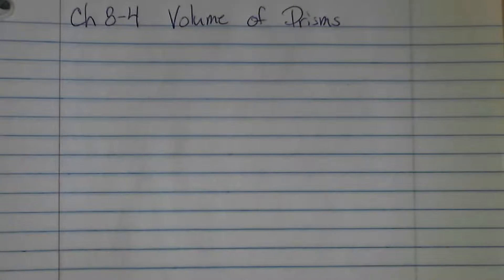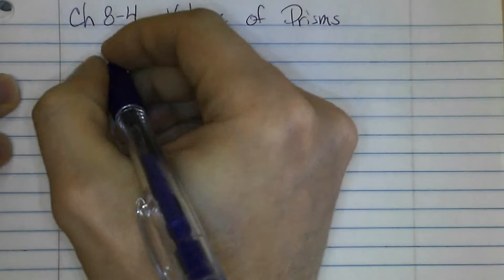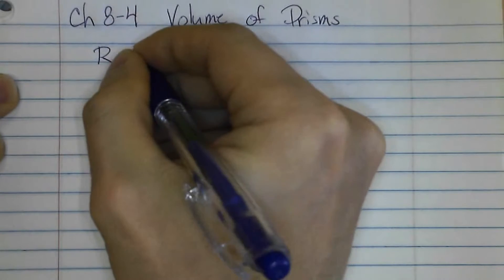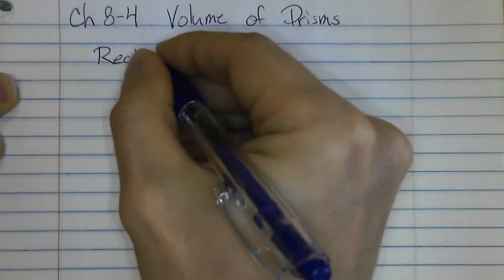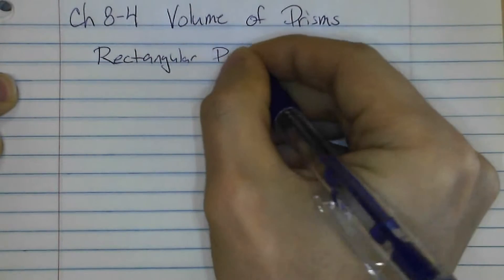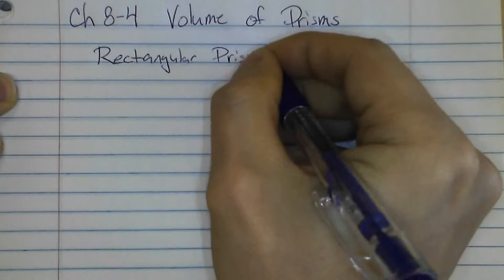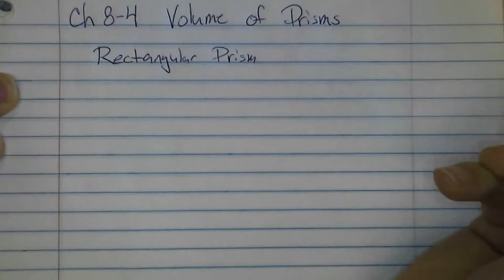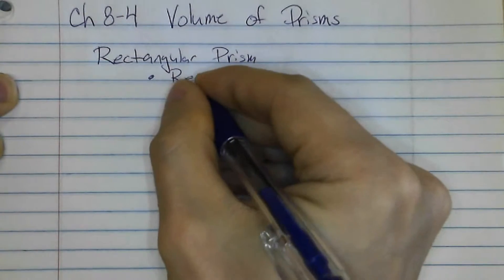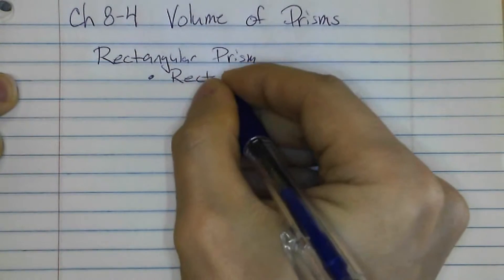Alright boys and girls, time for Chapter 8, Section 4: Volume of Prisms. The first one we're going to talk about is a rectangular prism. Before we talk about this in too much detail, we have to make sure that you understand how to find the area of a rectangle.